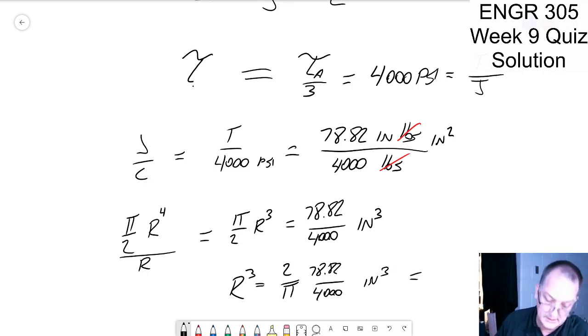Calculator. So clear, two divided by three point one four times 78.82 divided by four thousand, enter. Point zero one two six five five but I'm rounding up to six. And then I got to figure out cube root which I really struggle with. But I can do y to the x where x is equal to point three three three three.